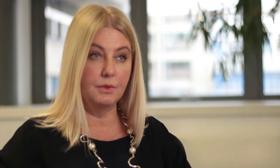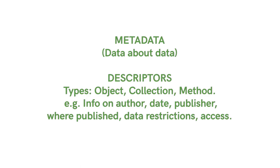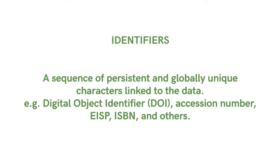At the core of the FAIR principles there are two elements: identifiers and metadata. Metadata are descriptors — for example of a dataset — describing who has made the dataset, who has done the study, when was it made, when was it published, where was it published, and how it can be accessed, including whether there are any restrictions or if it's freely available to all. The second element, identifiers, are a sequence of characters to identify an object, and those should be persistent and globally unique.